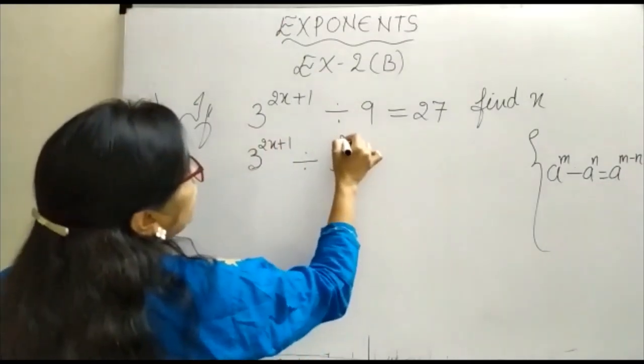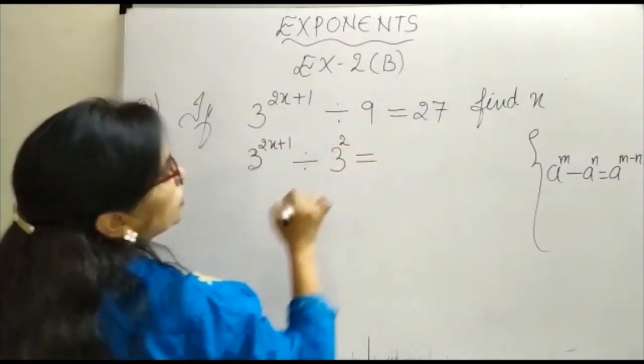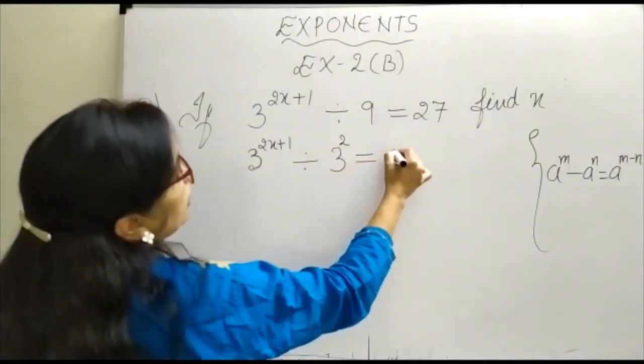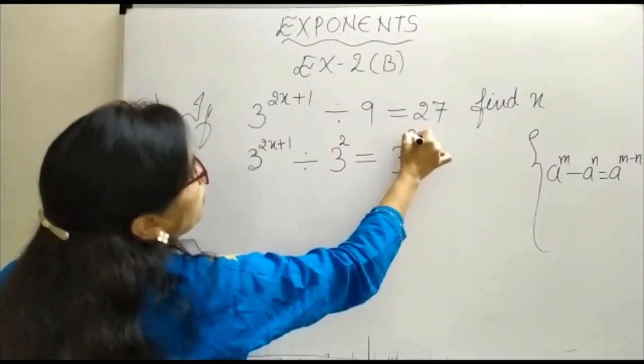This becomes 3 squared and this is equal to 27. 27 is 3 to the power 3, so this can be written as 3 to the power 3.